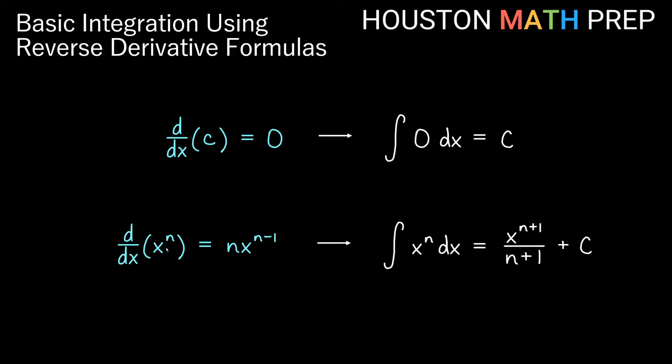We also remember that because the derivative of x to some power is we multiply out front by the power and then subtract one in the power. Our antiderivative formula, our power rule for integrals, is the opposite process in the opposite order. So we add one to the exponent and then we divide by that new power, making sure that we put our plus c on the end, the constant of integration.